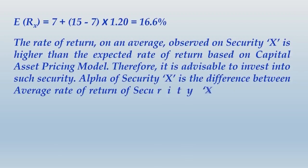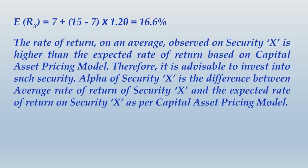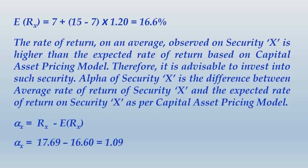The rate of return on average observed on security X is higher than the expected rate of return based on CAPM, therefore it is advisable to invest into this security. Alpha of security X is the difference between the average rate of return of security X and the expected rate of return as per CAPM. So alpha equals RX minus ERX, that is 17.69% minus 16.60%, giving alpha = 1.09%.